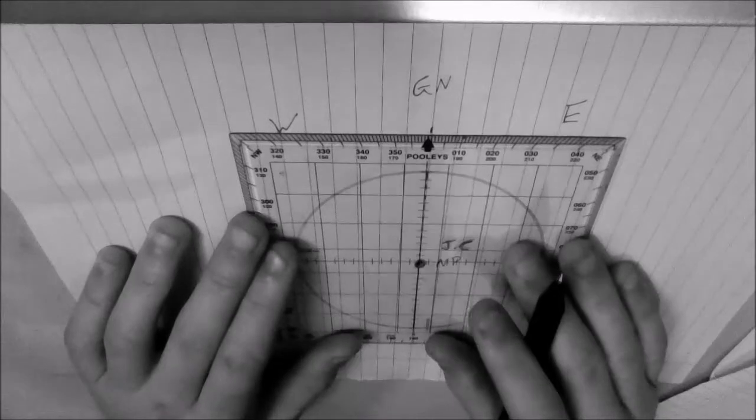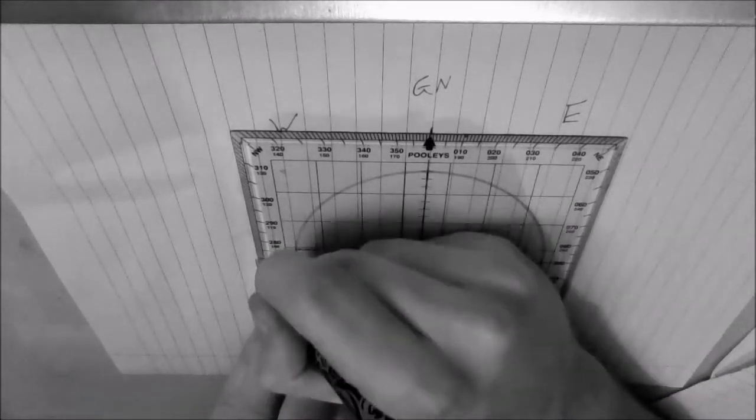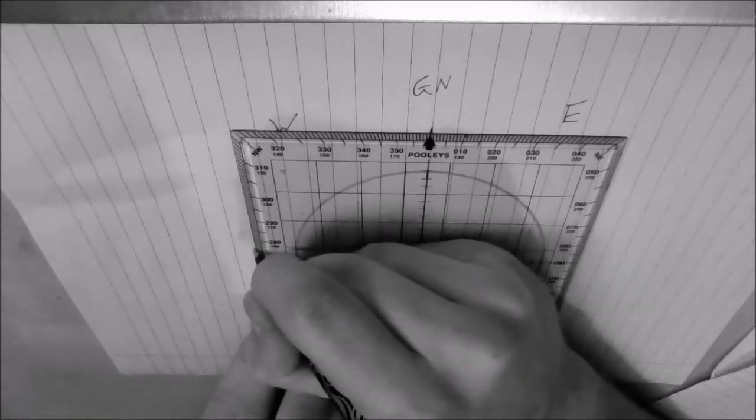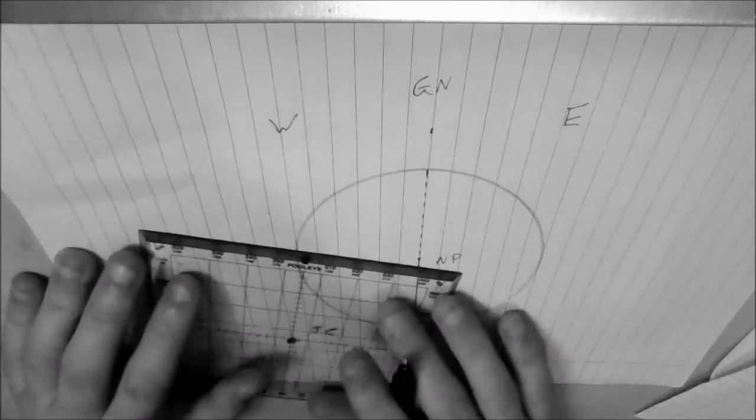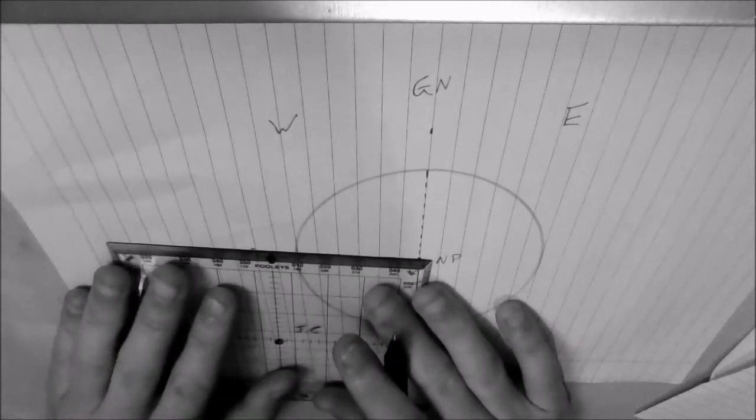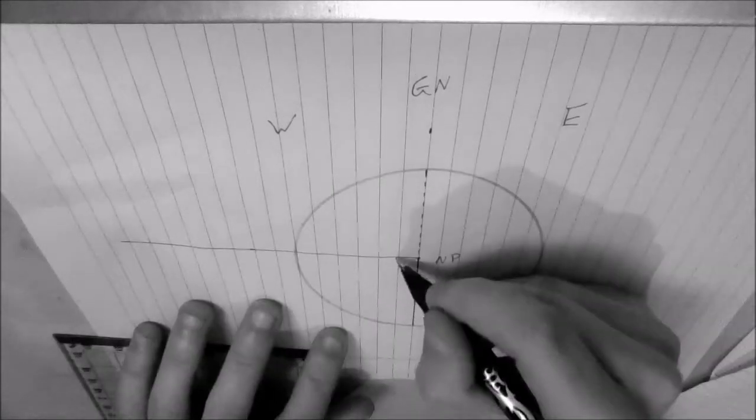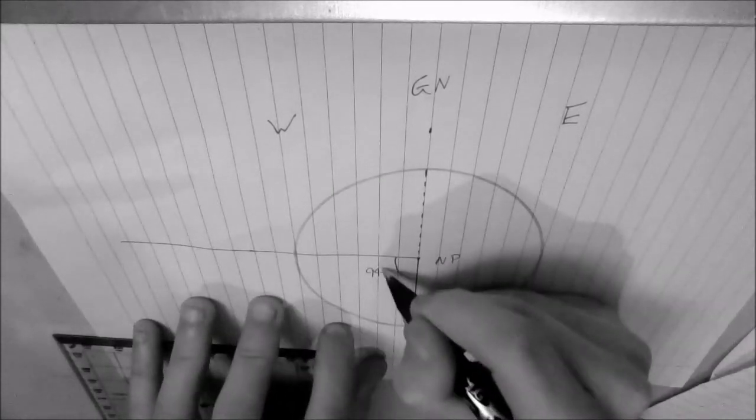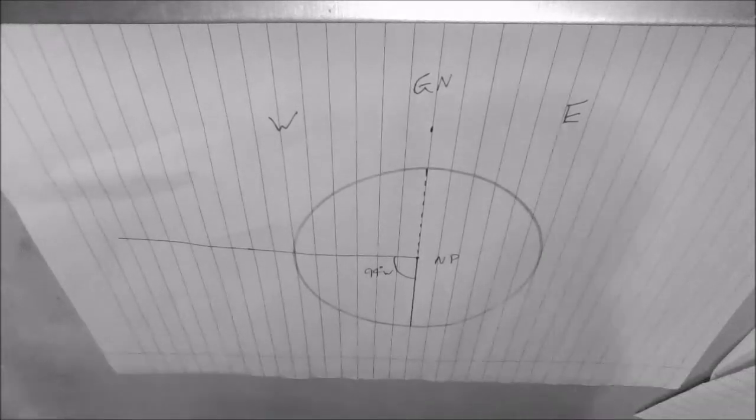So we'll put that down, put the dot in the center, and that will be on 90 degrees, so 94 is there. Okay, and what we'll do is put a line from the north pole through that mark we've just put down. Okay, and I'll just annotate that, so we know that that is an angle of 94 degrees, and it's west.